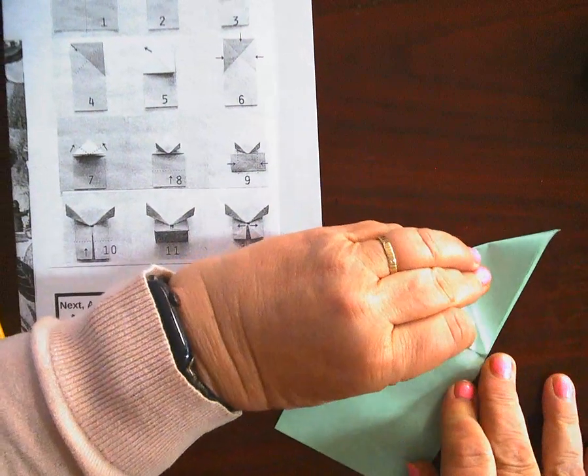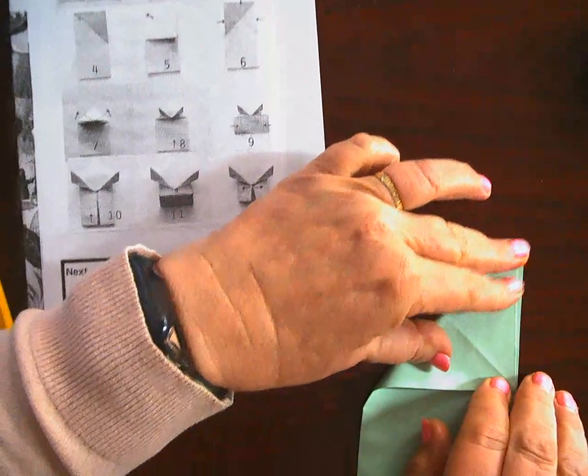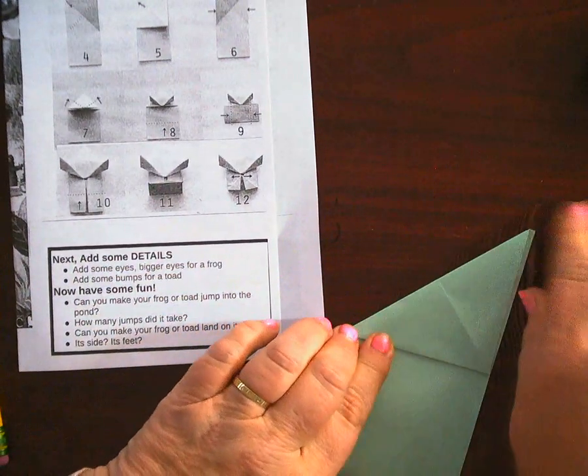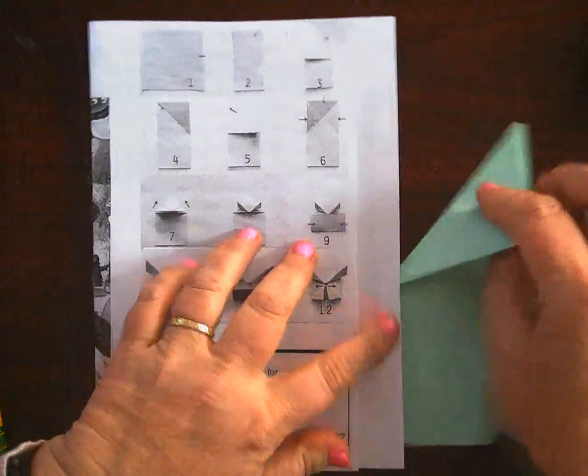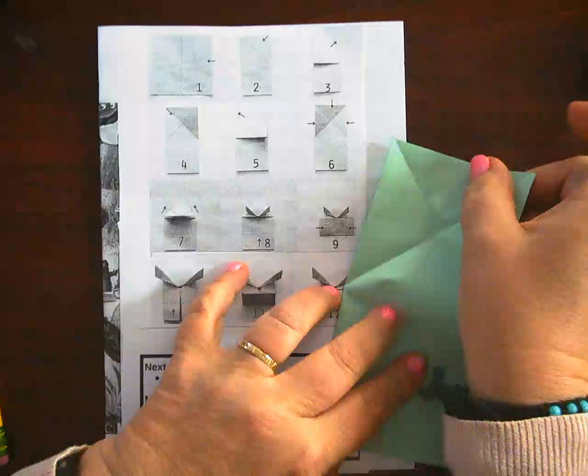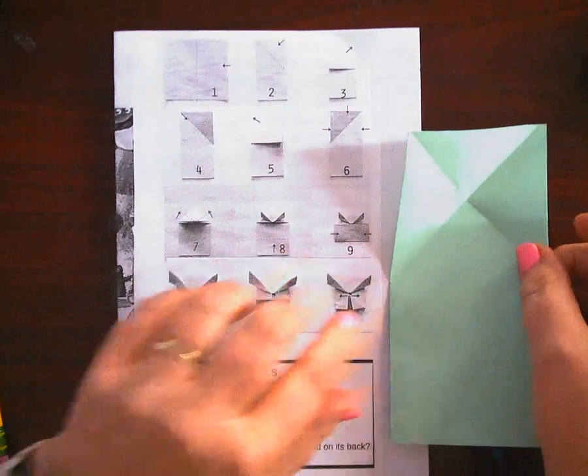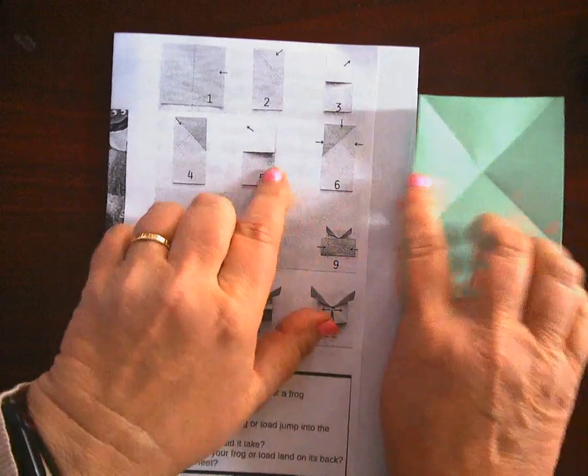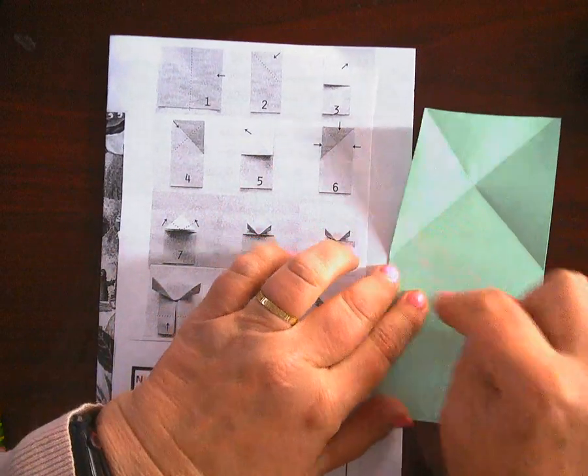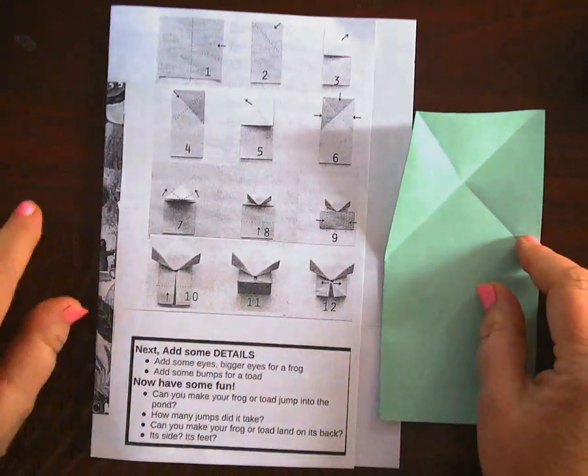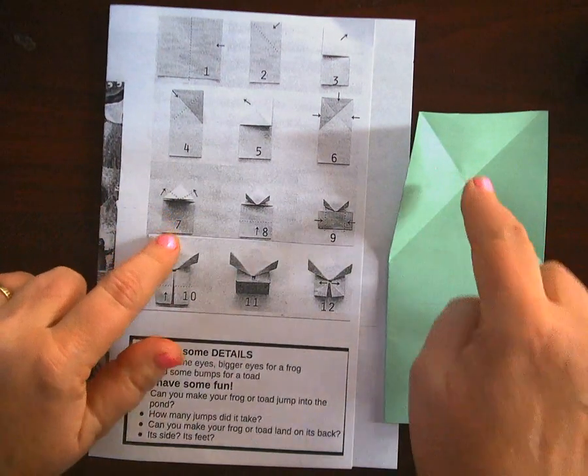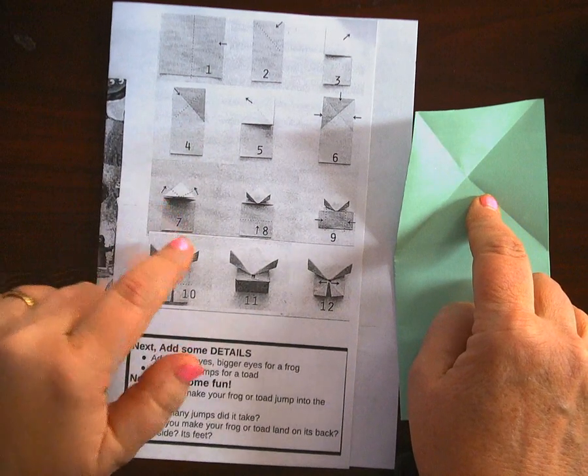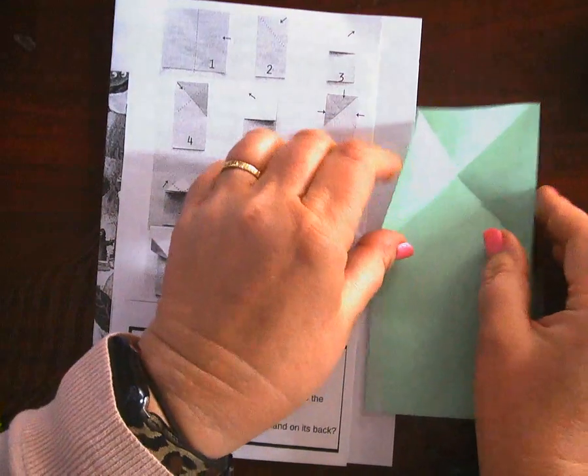And bring that over to that edge. Again, I'm not trying to race. Racing doesn't work with origami because if you don't have things lined up, then it doesn't work out. Some people can get frustrated with origami, but the more you work at it, the better you will get at it. Okay, so now I open it up and you guys can see that X right here.